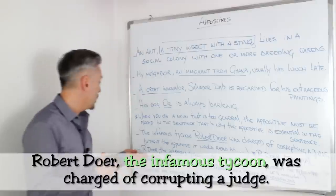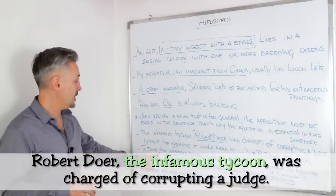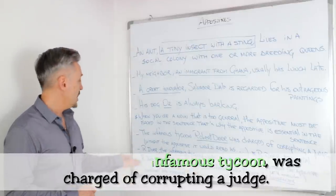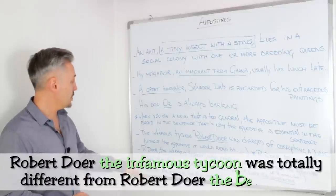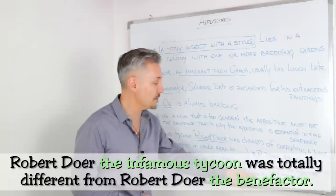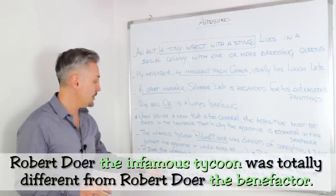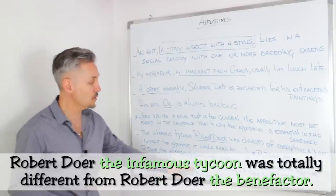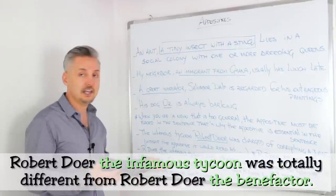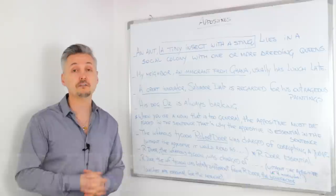If we know who was charged — Robert Dewar — and here you can see the commas around the appositive. The third example: 'Robert Dewar, the infamous tycoon, was totally different from Robert Dewar, the benefactor.' If you take out 'the infamous tycoon' and 'the benefactor,' it wouldn't make sense. So the qualities here, which are the appositives, are essential to the whole meaning of the sentence.